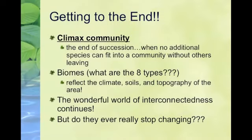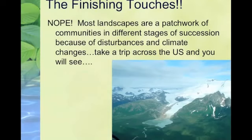Does a climax community ever really stop? The answer is really no. Because as soon as you reach that climax community, another species could move in, which will force another species out — and that is the process of succession. Things never really stop changing. If you go across the United States or across the world, you will see it is like a patchwork quilt of ecosystems moving and changing. It's because there are disturbances, climate changes, humans, other species — nothing ever is the same.